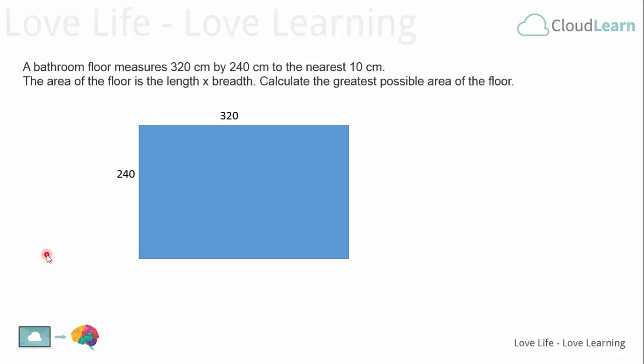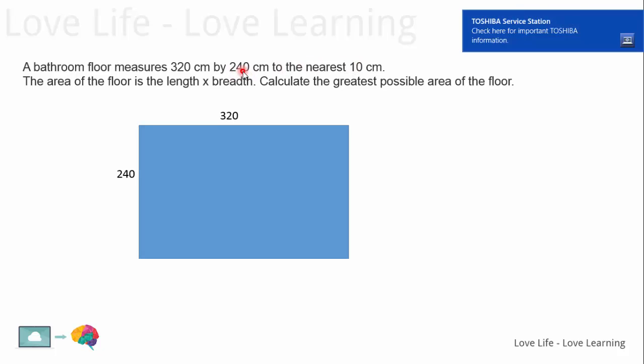Hi, in this video we're going to look at how to calculate areas when we're given an approximate measure of the dimensions. In this question we're told that a bathroom floor measures 320 centimeters by 240 centimeters to the nearest 10 centimeters, so it's an approximation of these two lengths, these aren't exact.